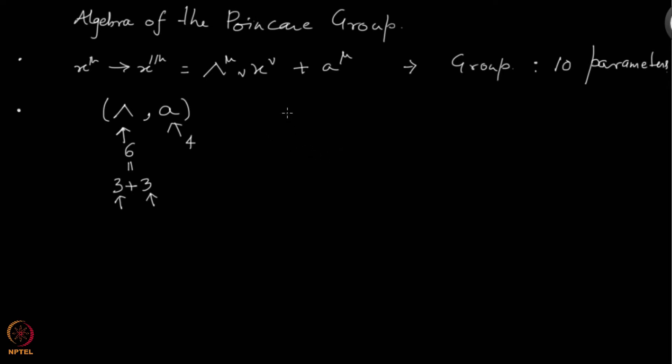Now what we want to do is we want to find out the generators of translations. The generators of the Lorentz transformation that we have, those we have already found. There is nothing to be done there. Only this piece is new and this is what we want to find out now.